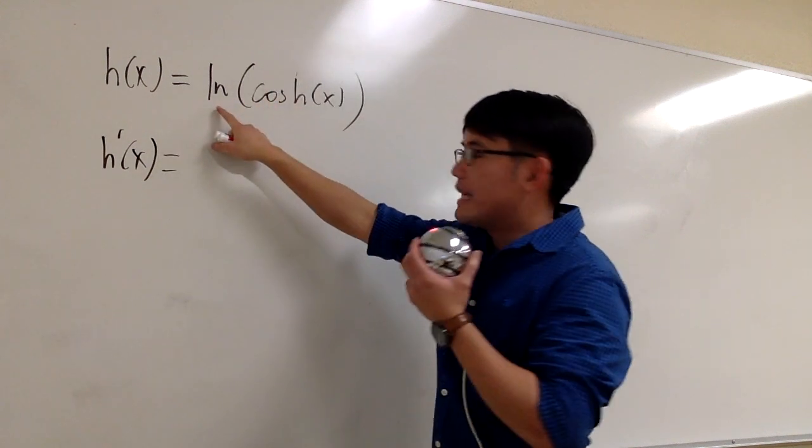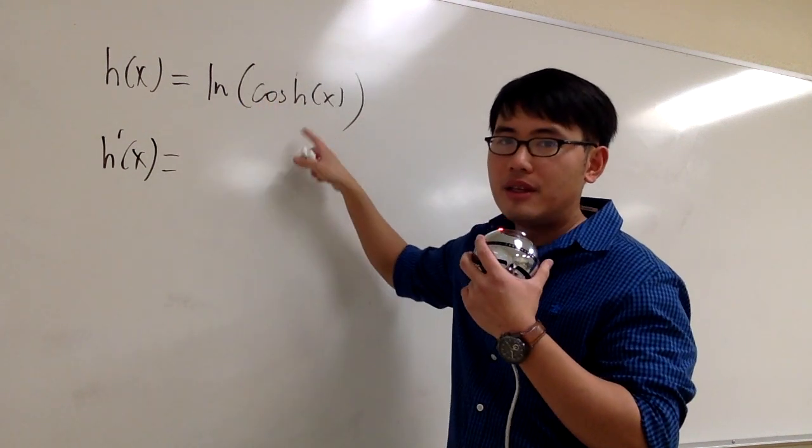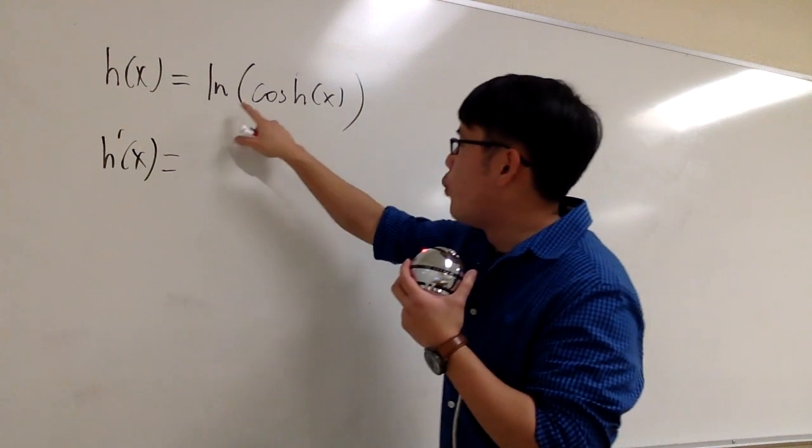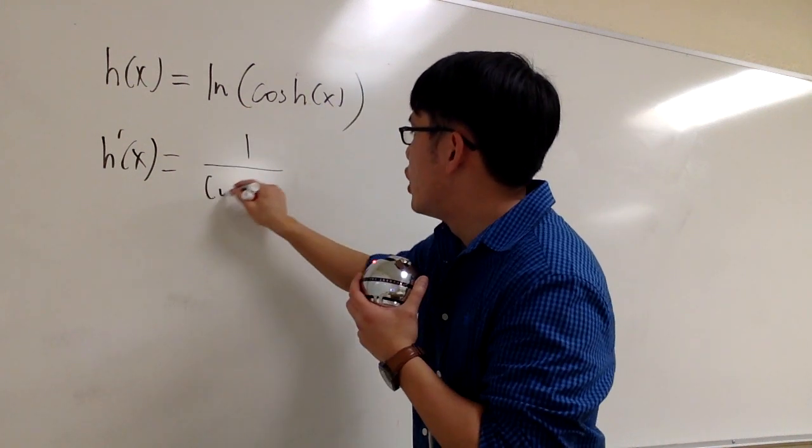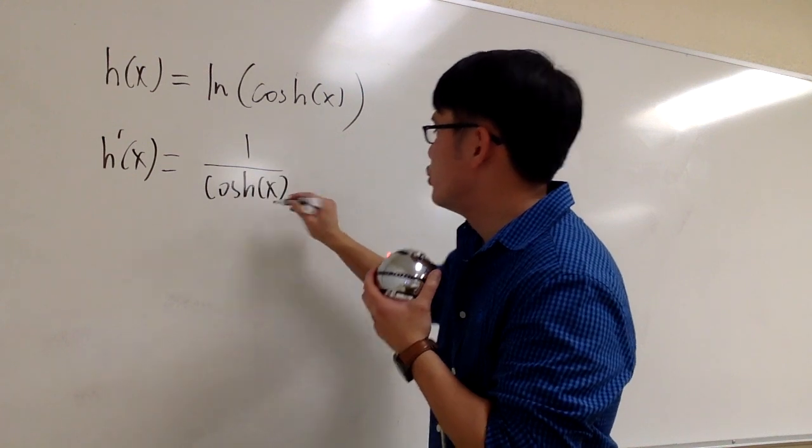Okay, you begin by asking yourself, what's the derivative of ln of something? And the response for that is 1 over the same thing. So it will be 1 over cosh(x) to begin with.